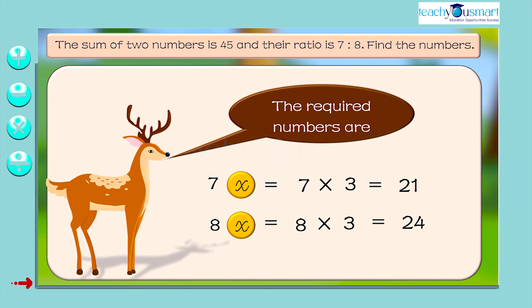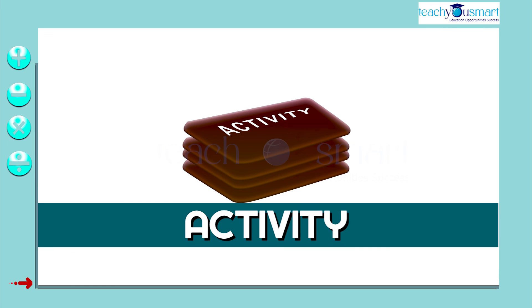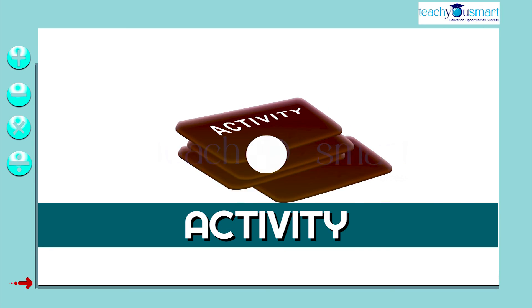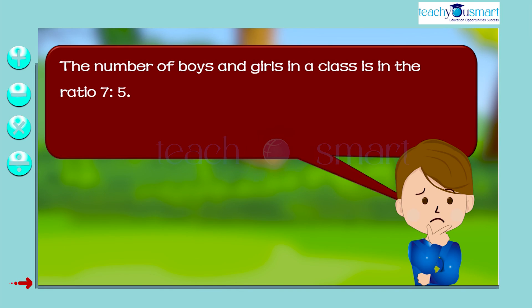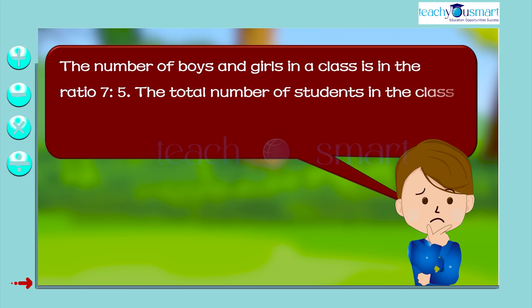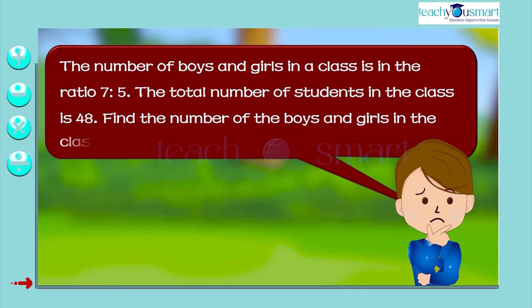Students, check the condition with the value of x. Before winding up, let's check how much you understood by doing an activity. The number of boys and girls in a class is in the ratio 7 is to 5. The total number of students in the class is 48. Find the number of boys and girls in the class.